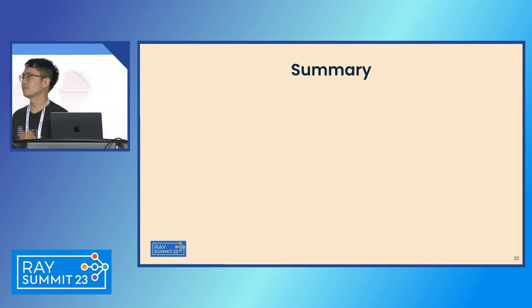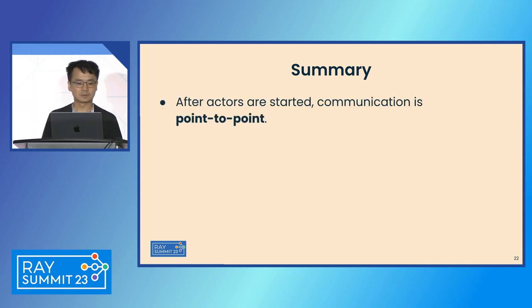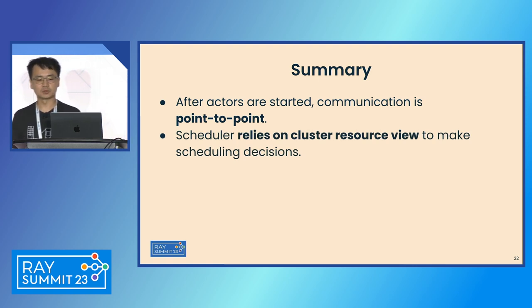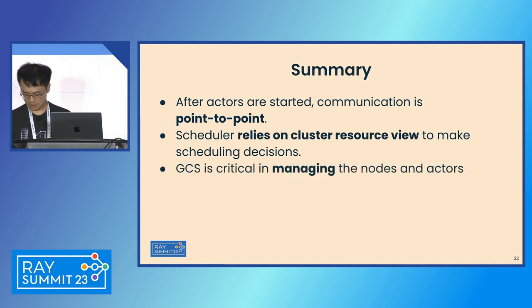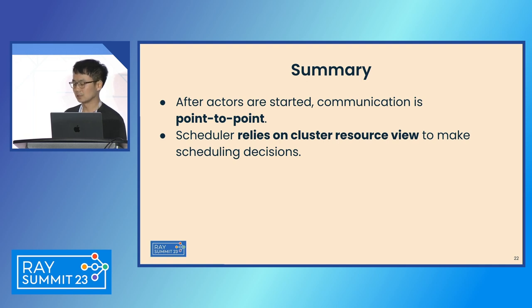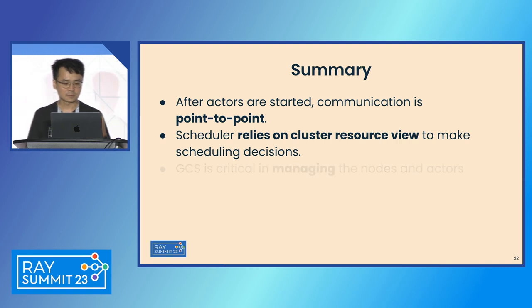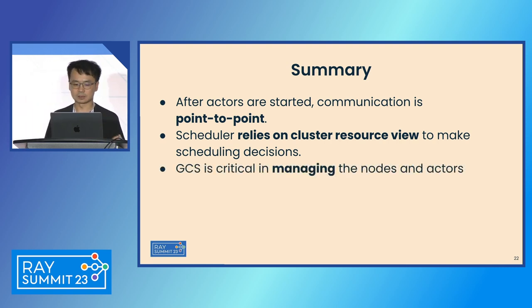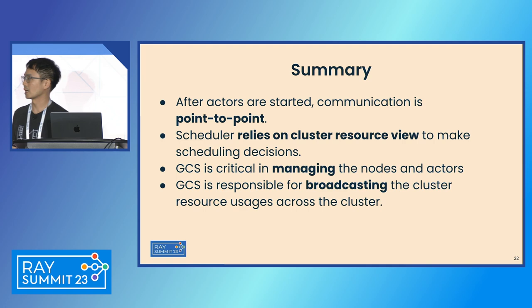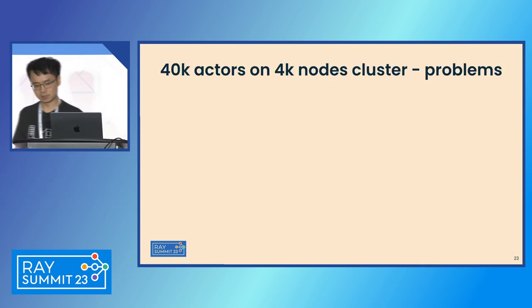Now we've reviewed the workload end-to-end, from adding a node to the cluster to how to create an actor. After an actor has started, communication is point-to-point and scalable. The scheduler relies on the cluster resource view to make scheduling decisions — if this view is not updated, scheduling decisions might fail. GCS is very critical in managing nodes and actors, and is also responsible for broadcasting the resource view across the cluster.